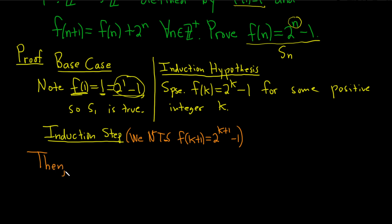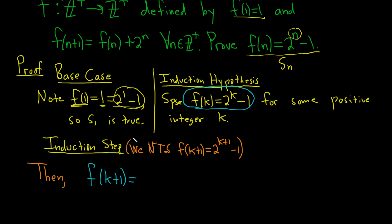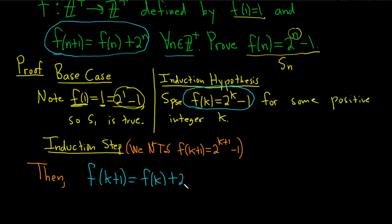So f(k+1): we can use the induction hypothesis, but we can't use it yet. First, we look at our recursive definition — f(n+1) = f(n) + 2^n. This is true for all n, so it's certainly true for k. So f(k+1) = f(k) + 2^k, by definition of our recursive function. Now we use the induction hypothesis and replace f(k) with 2^k - 1, giving us (2^k - 1) + 2^k. This step is by the induction hypothesis.